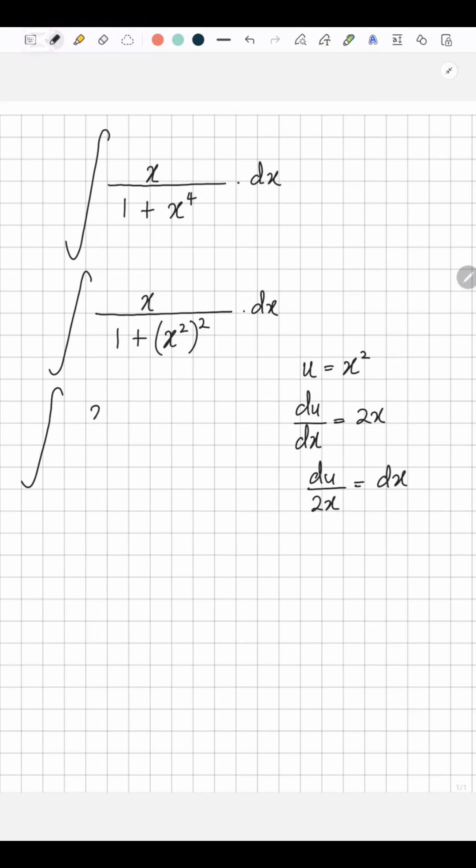You go back into your integration. You have x over 1 plus x squared. Instead of x squared, you can write u in brackets squared. Instead of dx, I'm going to write du over 2x.